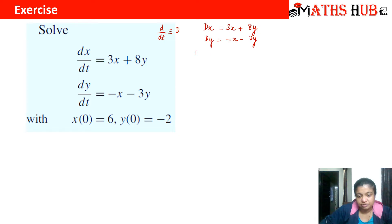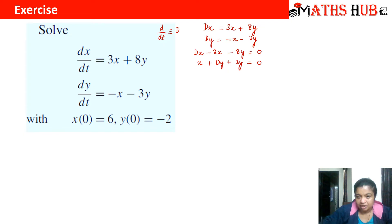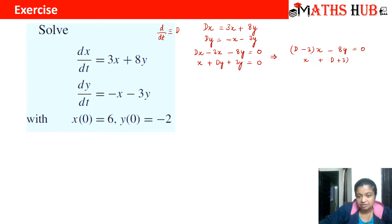Taking all terms to one side gives: Dx − 3x − 8y = 0, and x + Dy + 3y = 0. We can factor these: from the first equation, taking x common gives (D − 3)x − 8y = 0 — call this equation 1. From the second equation, taking y common from the last two terms gives x + (D + 3)y = 0 — call this equation 2.